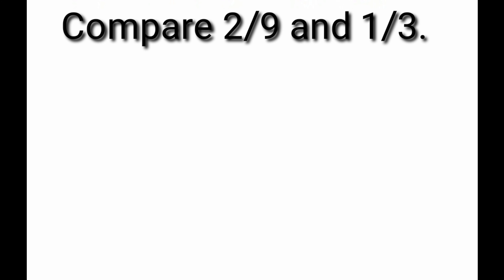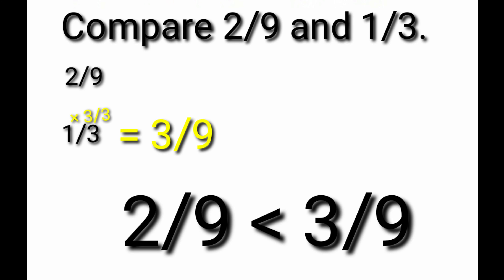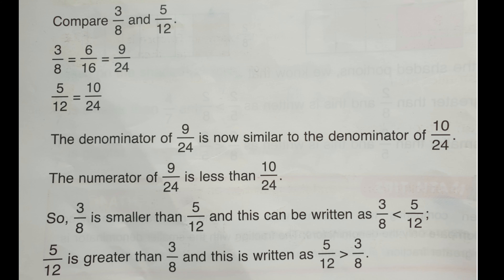Another example: compare two ninths and one third. Equalize the denominators by multiplying one third by three thirds. One third becomes three ninths — they are equivalent fractions. Therefore, two ninths is smaller than three ninths.